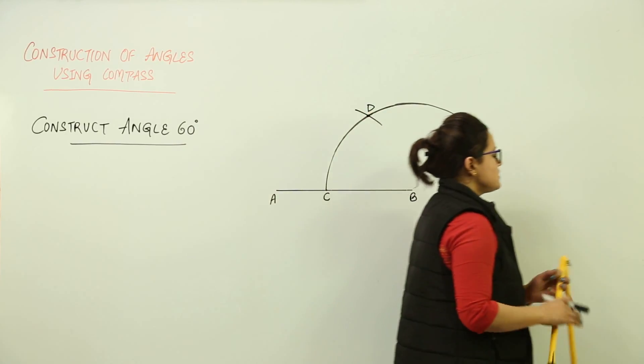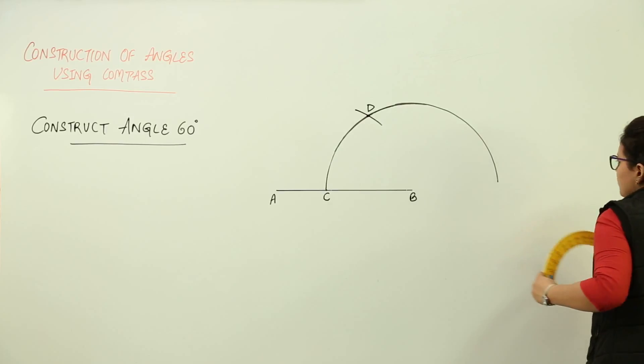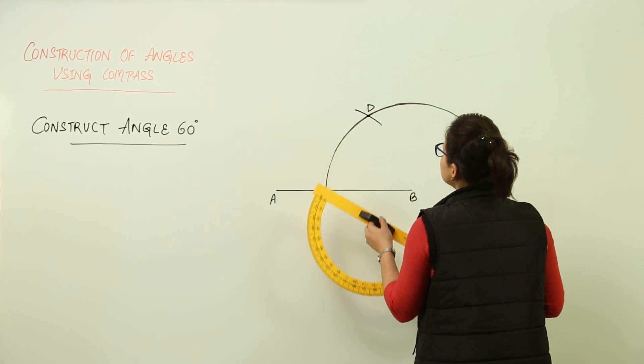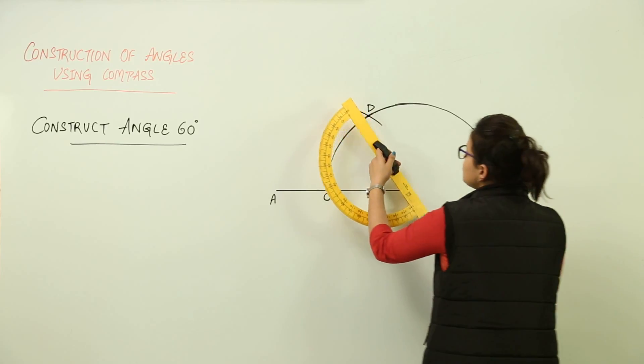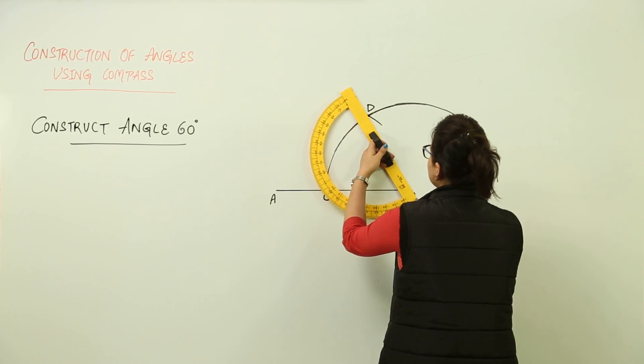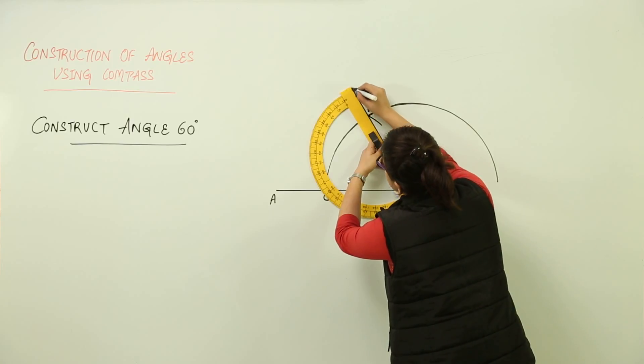All you have to do now is join point D with the vertex B. Just do it and when you do join, you are going to get your angle of 60 degrees.